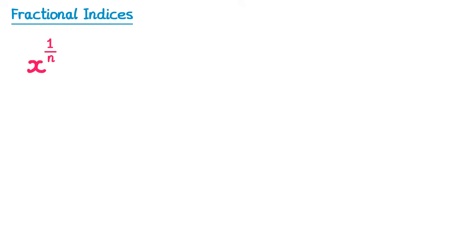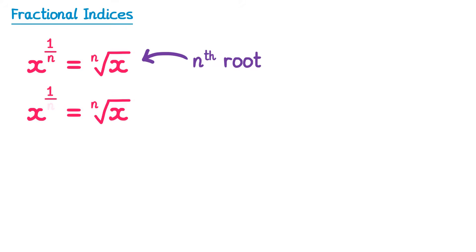The rule for this is as follows. We can read the right-hand side as the nth root of x. If we had x to the 1 over 2, then we're looking for the second root of x. We don't normally call this the second root — we write it like this and call it the square root. So if you have anything to the power half, you just need to do the square root of it.